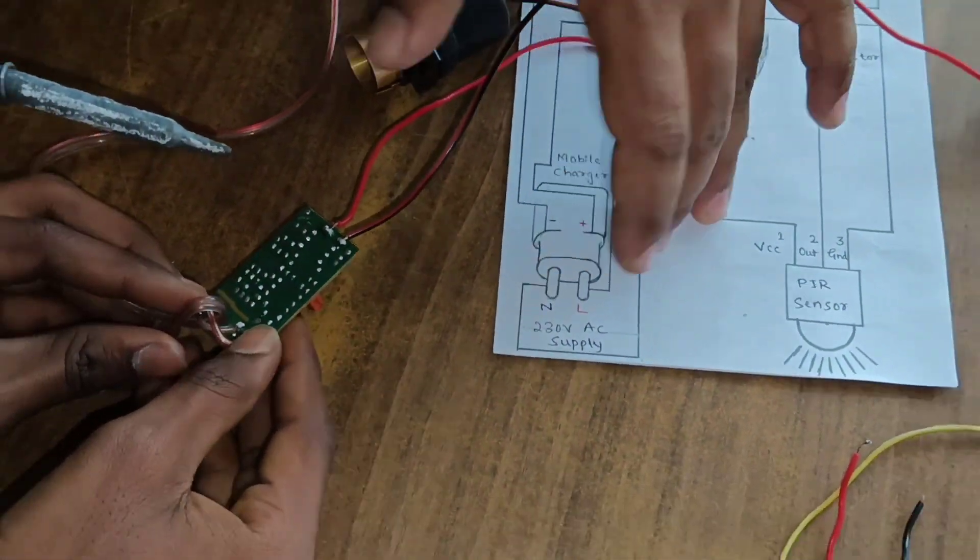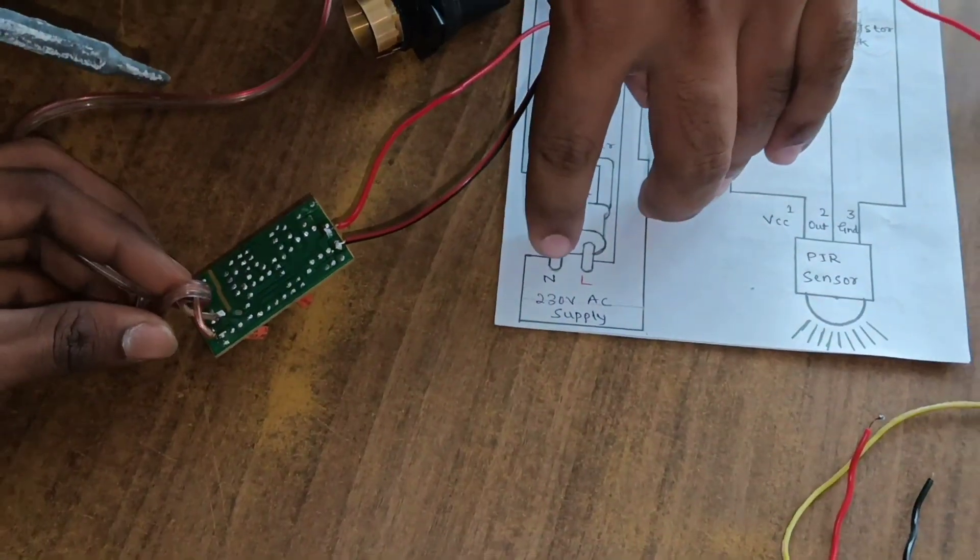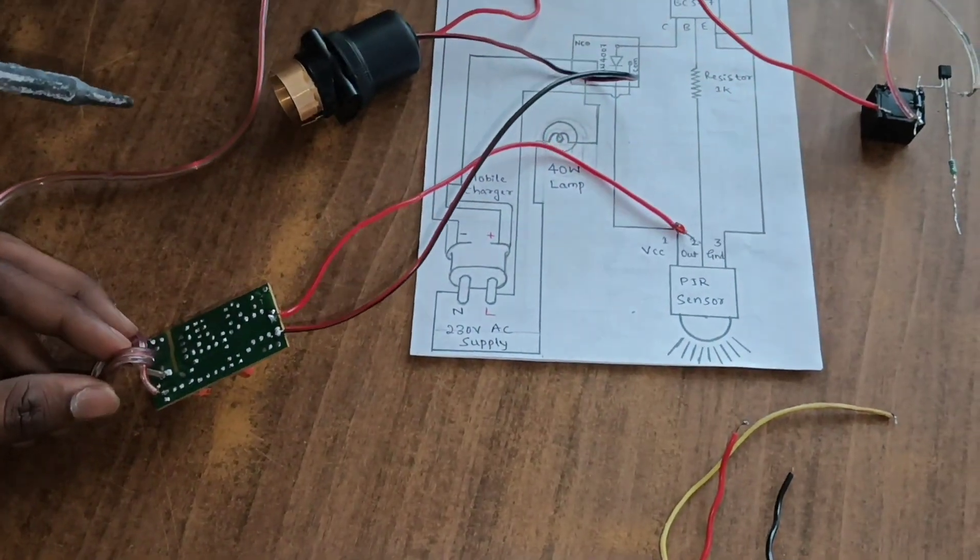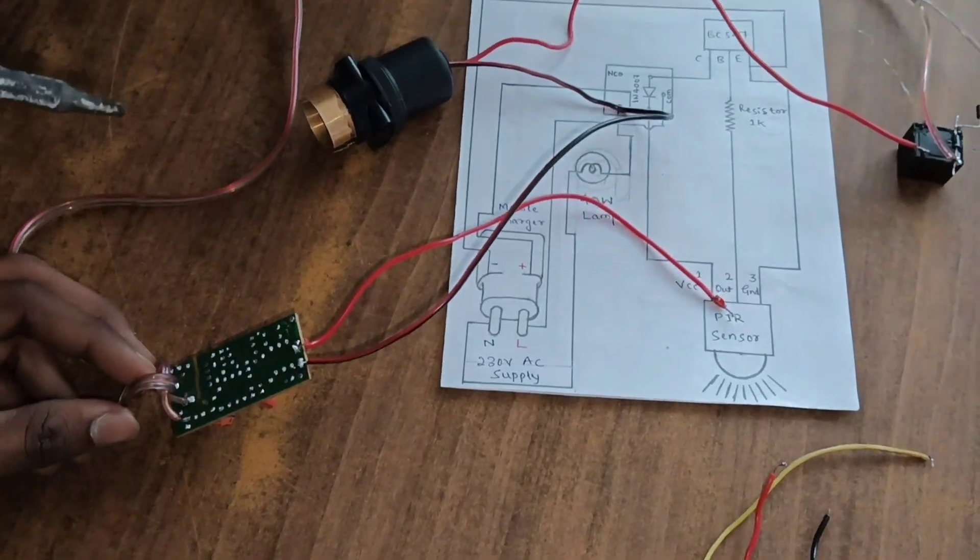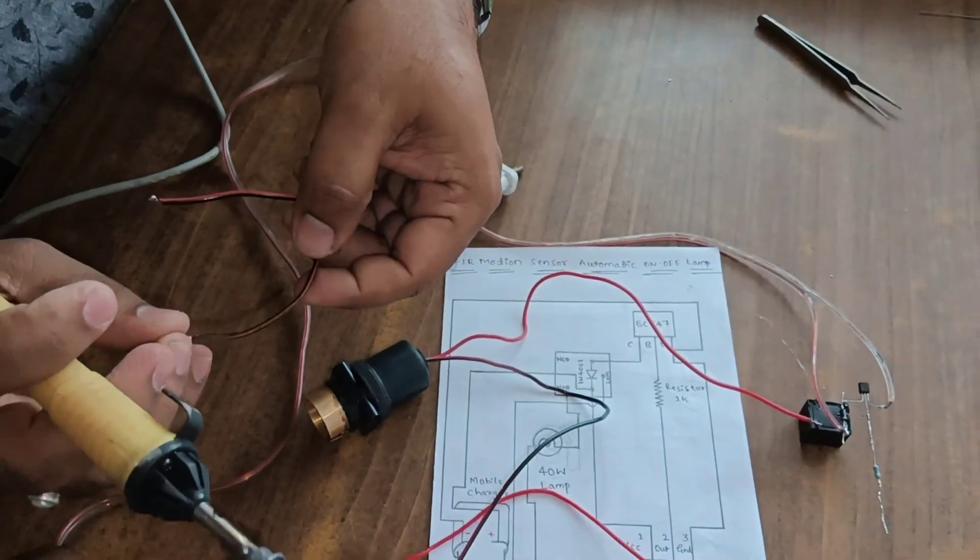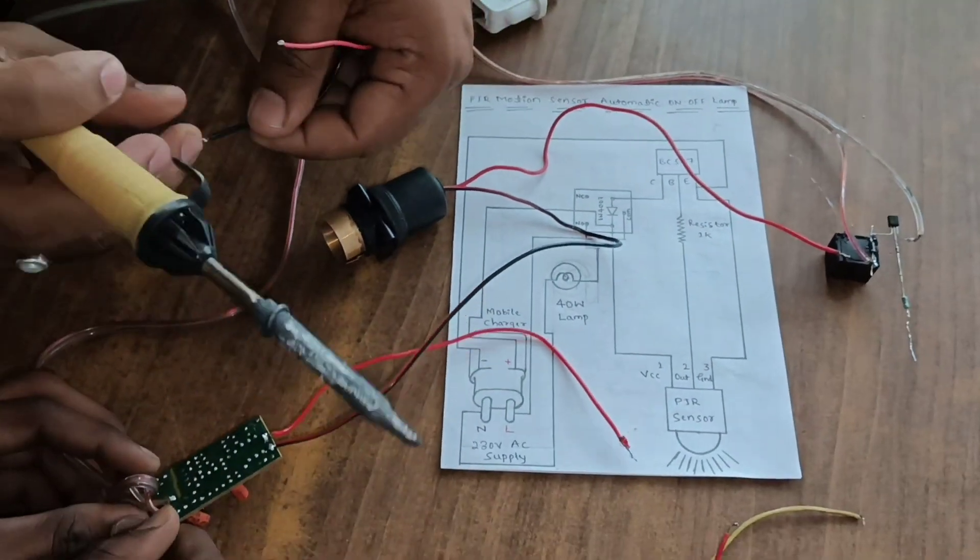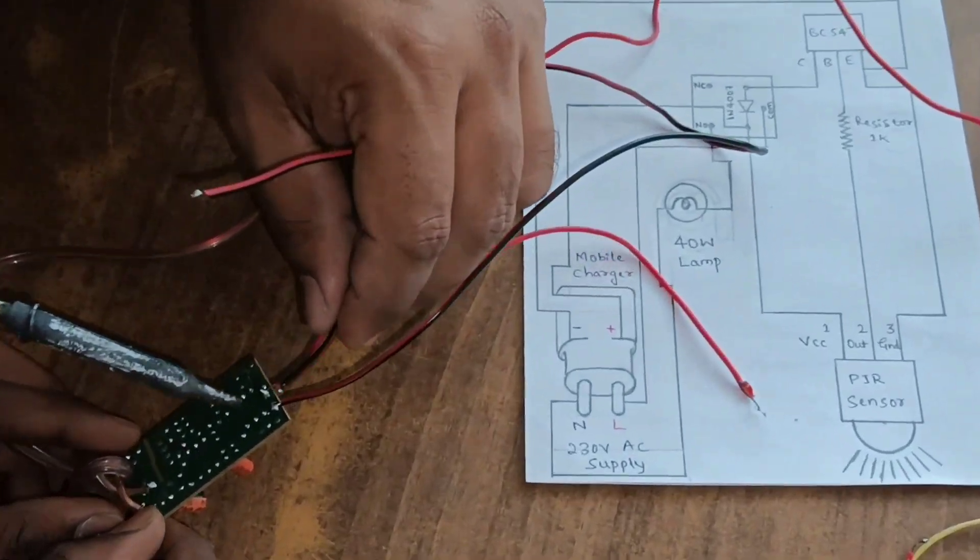And from that point, we connect one supply neutral. Take two-pin plug and this negative wire is connected to this neutral.